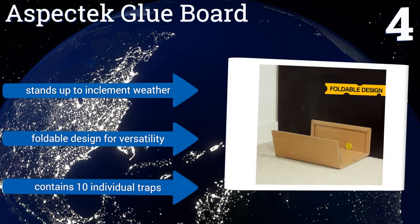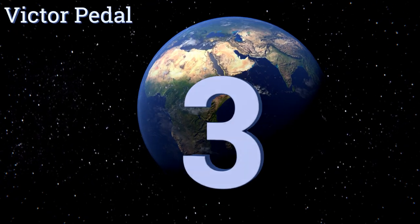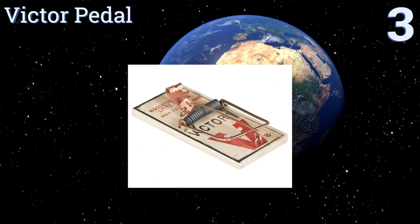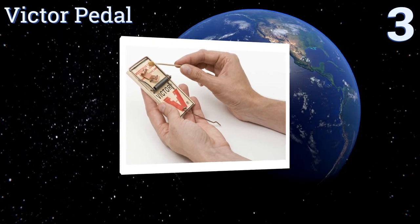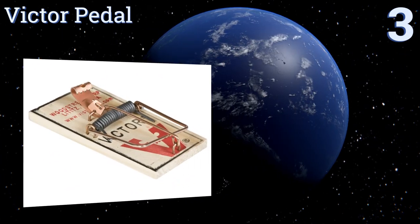Nearing the top of our list at number three: since no chemicals or poisons are used in its construction, the Victor Pedal is a prudent choice if you have children or pets. It's designed to be placed flush along a wall, as that's where mice tend to do most of their traveling.